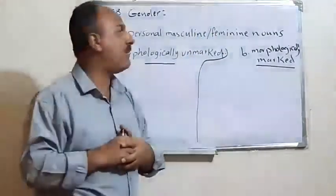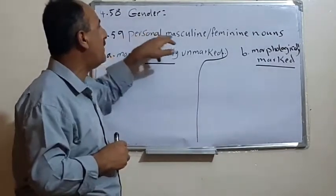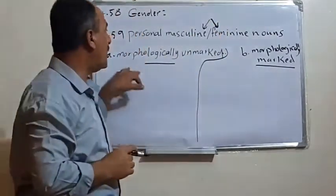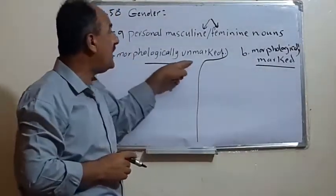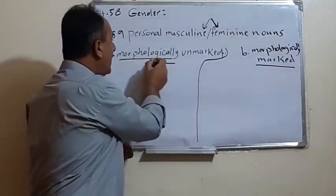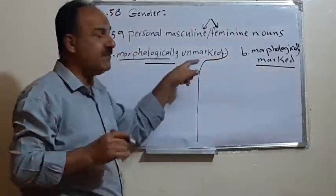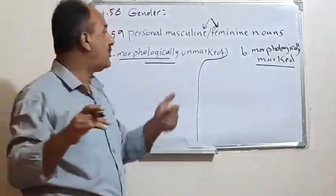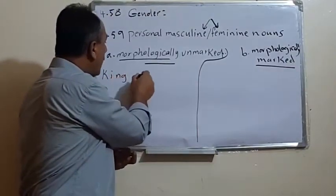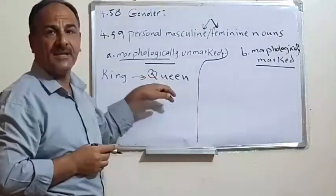Now, concerning the categorization of gender in English, we have two types. The first is morphologically unmarked, meaning there is no suffix, no sign, no mark to indicate whether a word is for men or for women. For example, the feminine of 'king' is 'queen' — these are two completely different words with no structural relation.